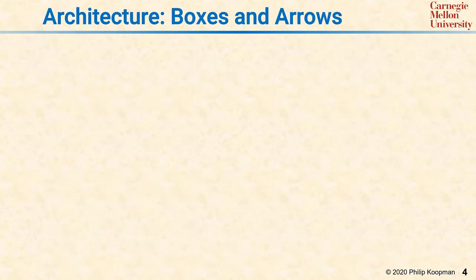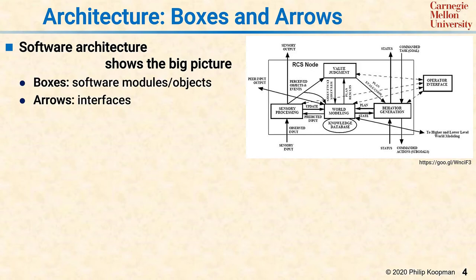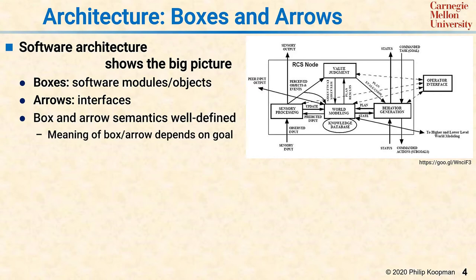Architectures tend to be represented as boxes and arrows diagrams. The point of a software architecture diagram is to show the big picture to orient people doing more detailed designs. Within an architecture diagram, the boxes typically represent software modules or objects, and the arrows represent interfaces. It's important that the diagram actually has meaning — each box should have defined semantics, and the same goes for each arrow.